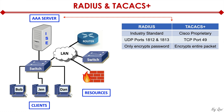RADIUS is typically used for authenticating users. TACACS+ is Cisco proprietary. There's another version called TACACS without the plus, which is open standard, but Cisco took that and made it much better — and that's how TACACS+ was born. It uses TCP port 49 and encrypts the entire packet, including the password, username, and all attributes. TACACS+ is typically used for authenticating network devices.